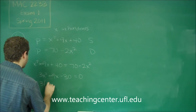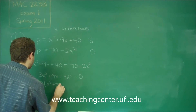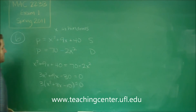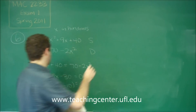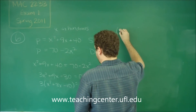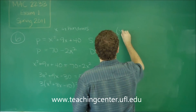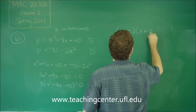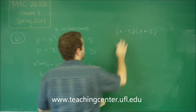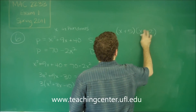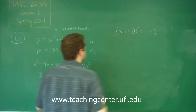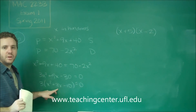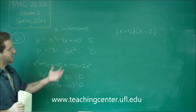After factoring out the 3, we get x squared plus 3x minus 10, which can be factored as (x plus 5)(x minus 2), because we need to end up with positive 3x in the middle and negative 10 on the outside.